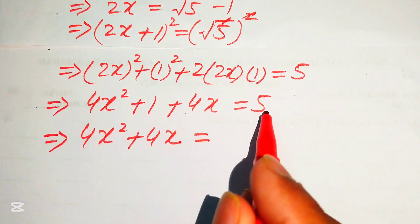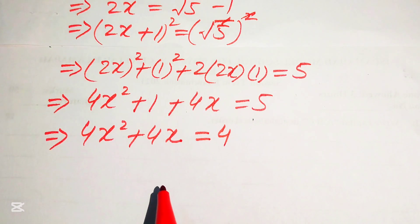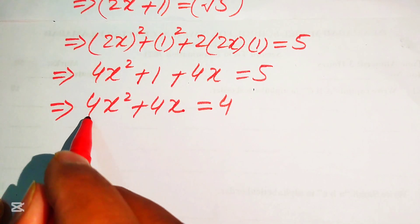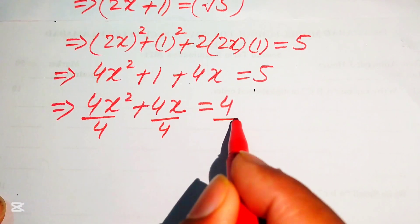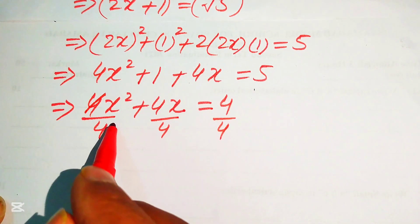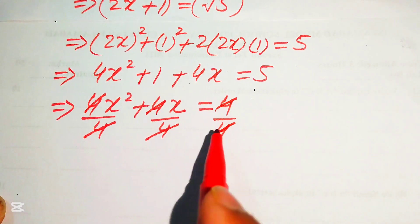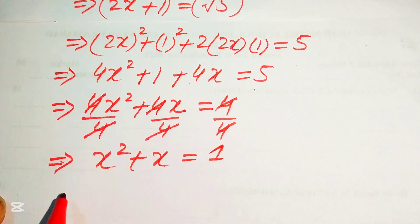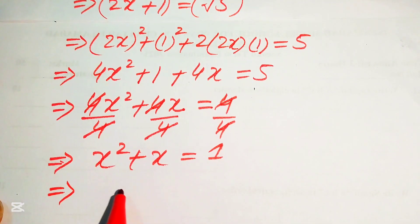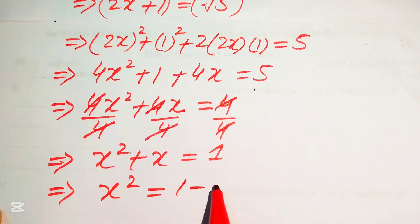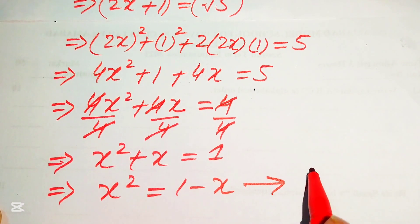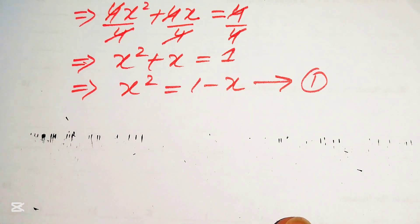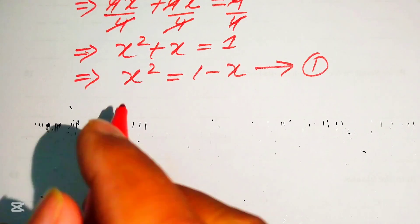We move 1 to the right side: 4x² + 4x = 4. Dividing every term by 4 gives x² + x = 1. Moving x to the right: x² = 1 − x. We label this Equation 1.